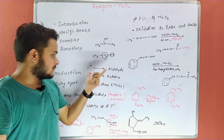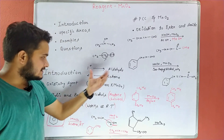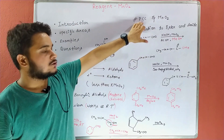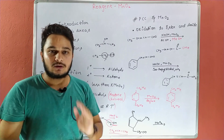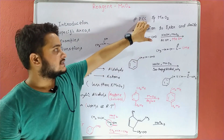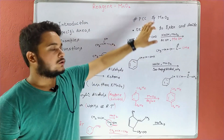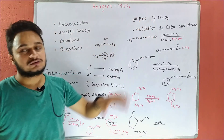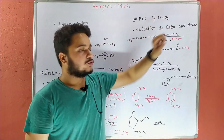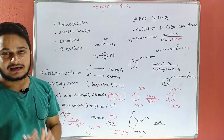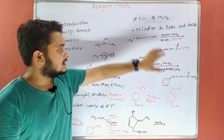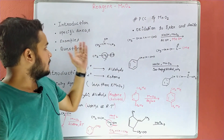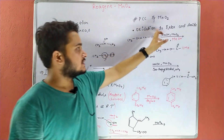This is the introductory part. Now, what is the difference between PCC and MnO2? PCC is selective for primary alcohol — when you have non-allylic primary alcohol, PCC will oxidize it. But in the case of MnO2, it will only oxidize allylic and benzylic alcohols. PCC करेगा सबको, but MnO2 करेगा only allylic और benzylic alcohols को।